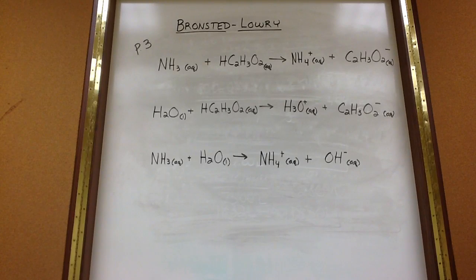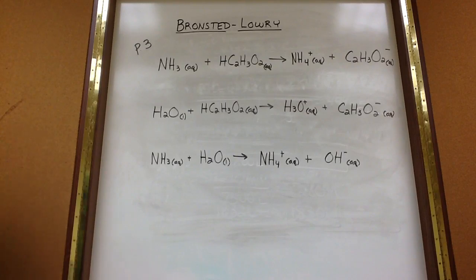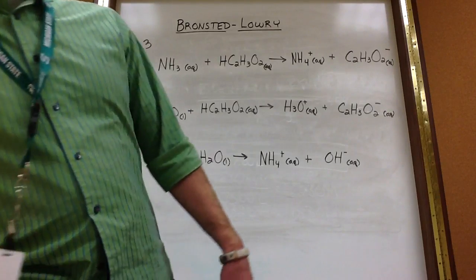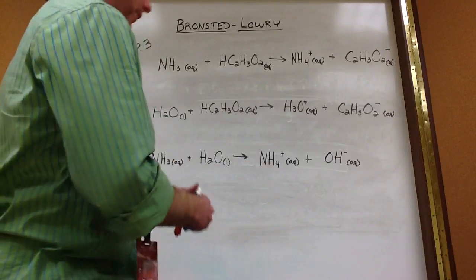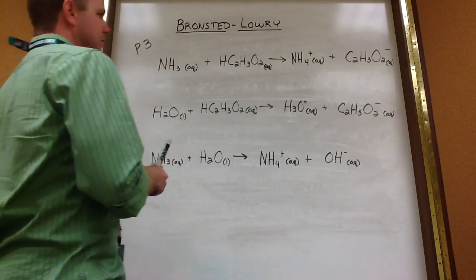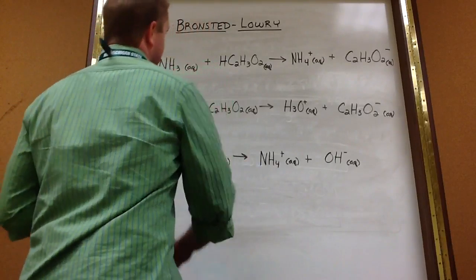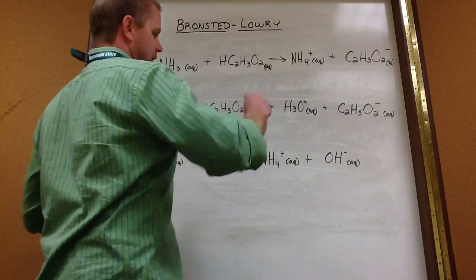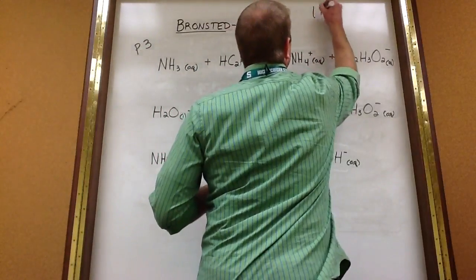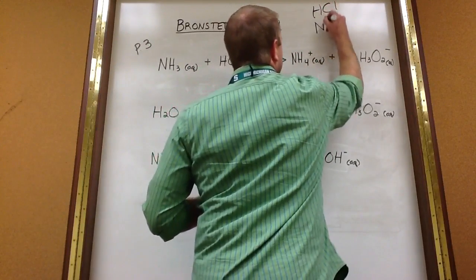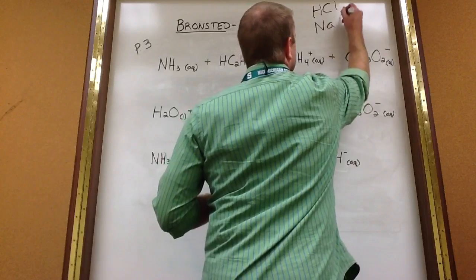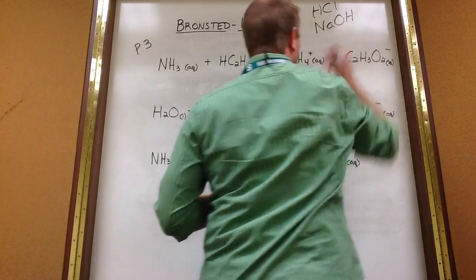Okay, Bronsted-Lowry acid-base pairs. We have the definition of acids and bases from Arrhenius. For Arrhenius, the definition is: for an acid, we look for an H at the beginning, so something like HCl. And likewise, for a base, we look for the OH at the end — hydroxide and the OH.